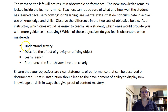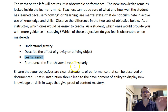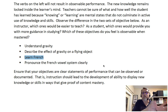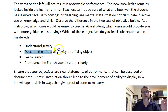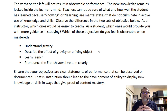One more example: look at the difference between 'understand gravity' versus 'describe the effect gravity has on a flying object.' Look at the difference between 'learn French' versus 'pronounce the verb vowel system clearly.' One is measurable; one is not. You hope the learner will learn French in the course, but it's through the pronunciation of that vowel system that a learner can be assessed and improvements can be made. It's through the description of the effect of gravity that the learner will be able to show that they understand gravity. When working through your curriculum, you need to identify what the learner will do.